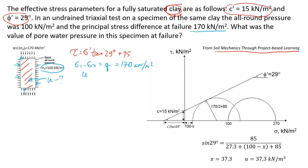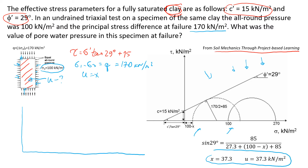Let's call the pore pressure x — that's what we're going to find. First, we need to draw a schematic diagram using a Mohr's circle. We know sigma 3 is 100 kilonewtons per square meter. Sigma 1 equals sigma 3 plus the deviator stress, which is 100 plus 170, giving us 270 kilonewtons per square meter.